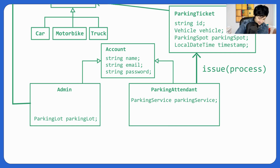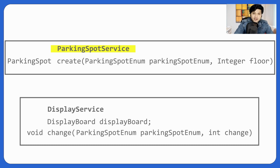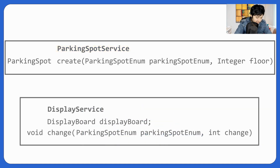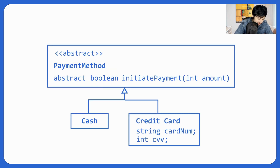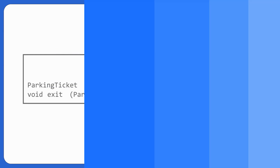We also covered the services: Parking Spot Service to create parking spots (avoiding multiple creation functions), Display Service using enums for updating free spot counts, Payment Service for cash and credit card, and finally Parking Service which we just discussed. Now let's move on to the sequence diagram.